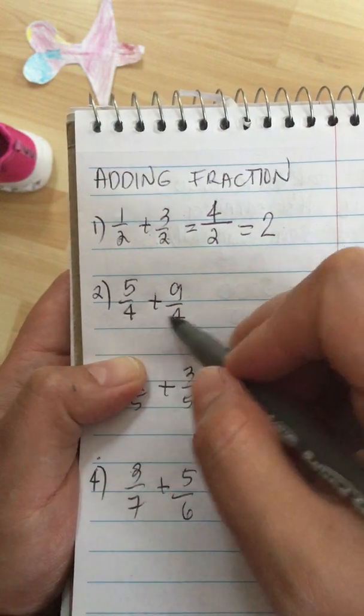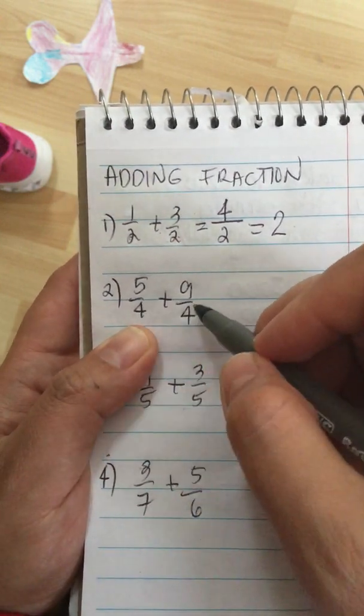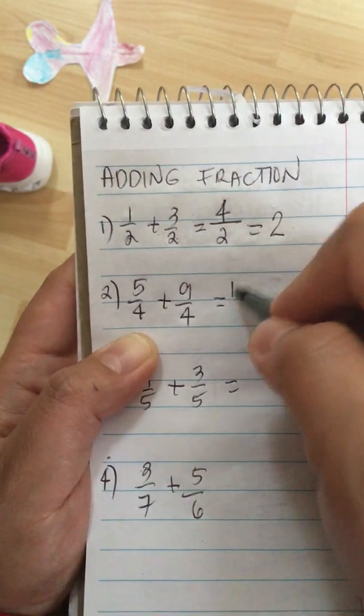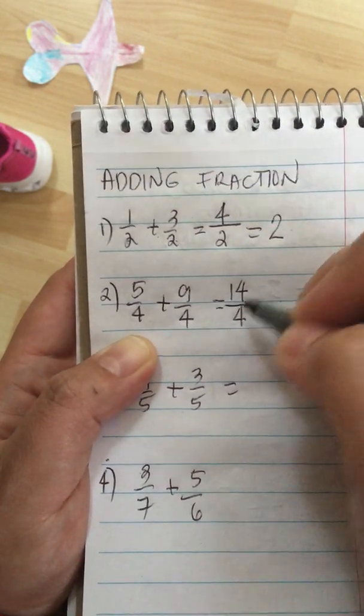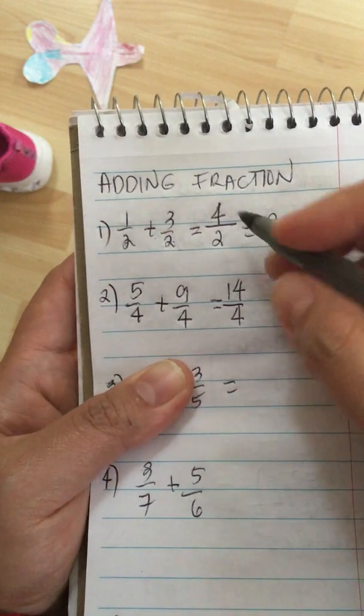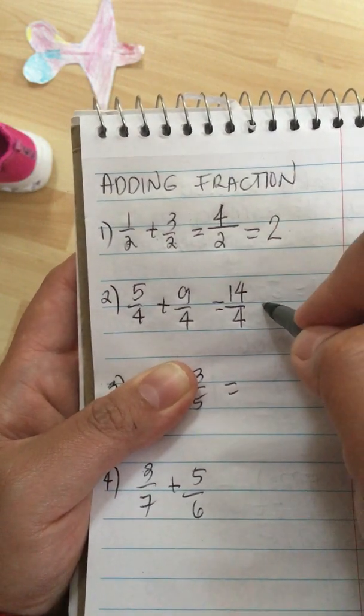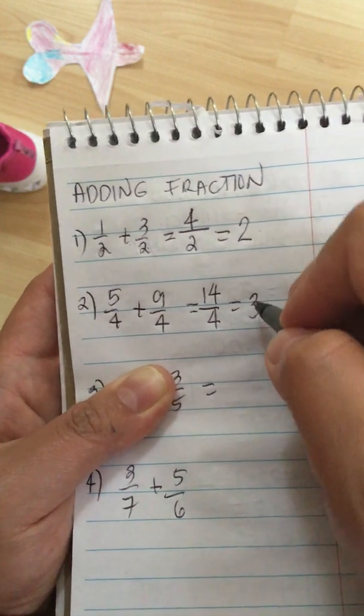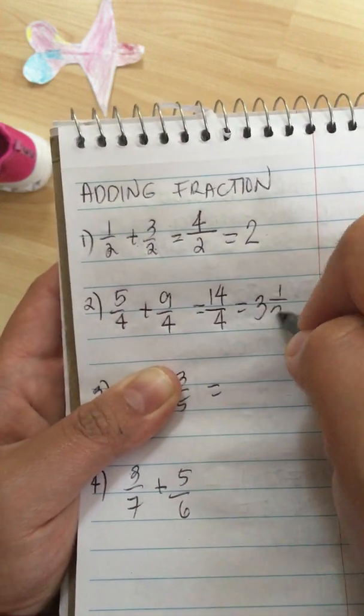Now here they have the same denominator, so we can add the numerator. So 5 plus 9 is equal to 14 over 4, or if you want it in mixed number, 3 and 1 half.